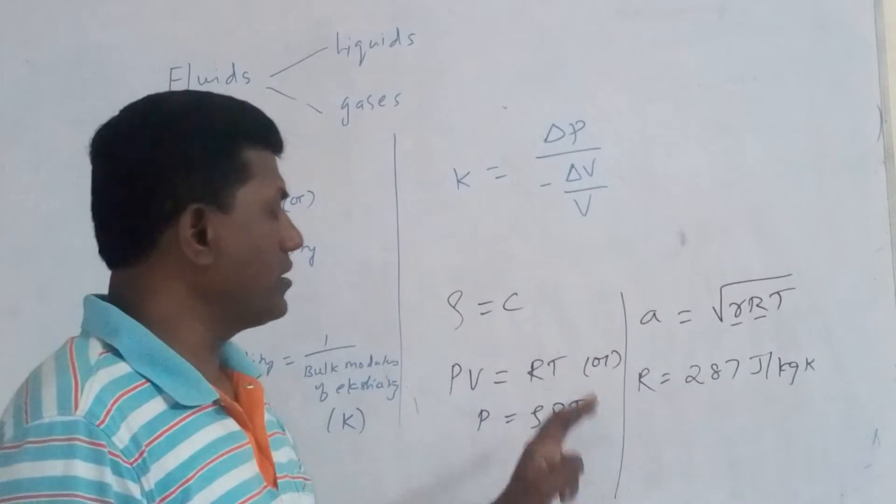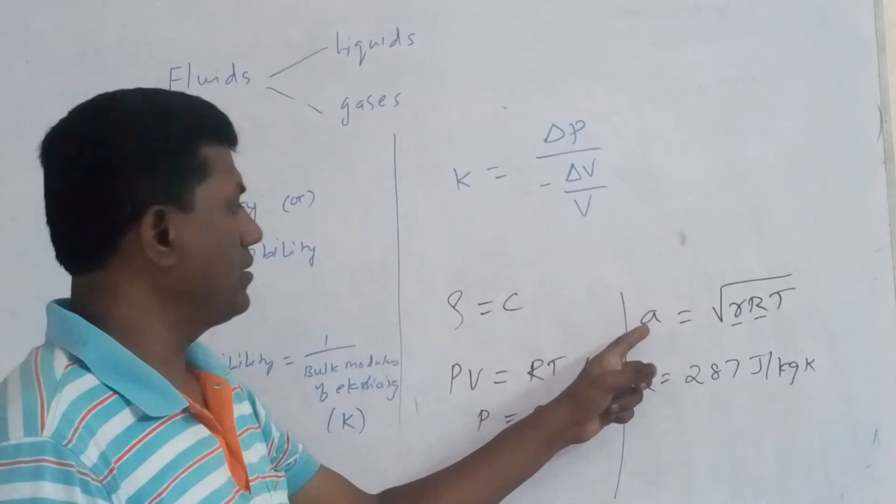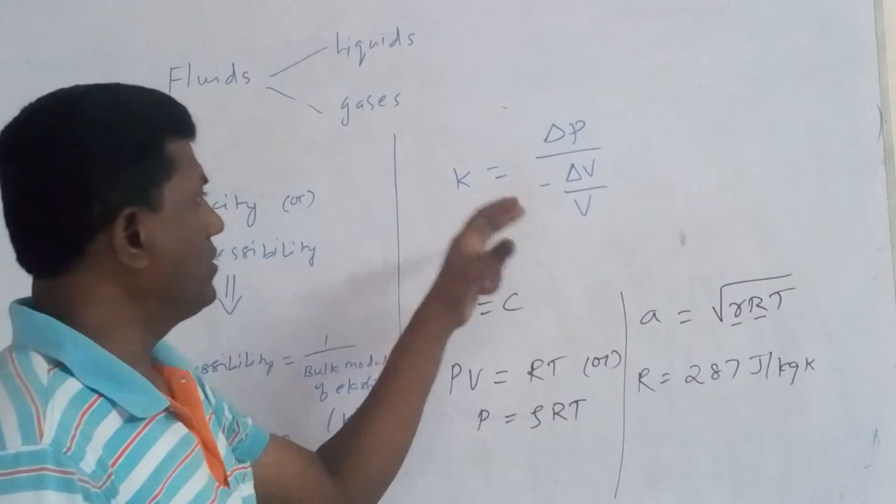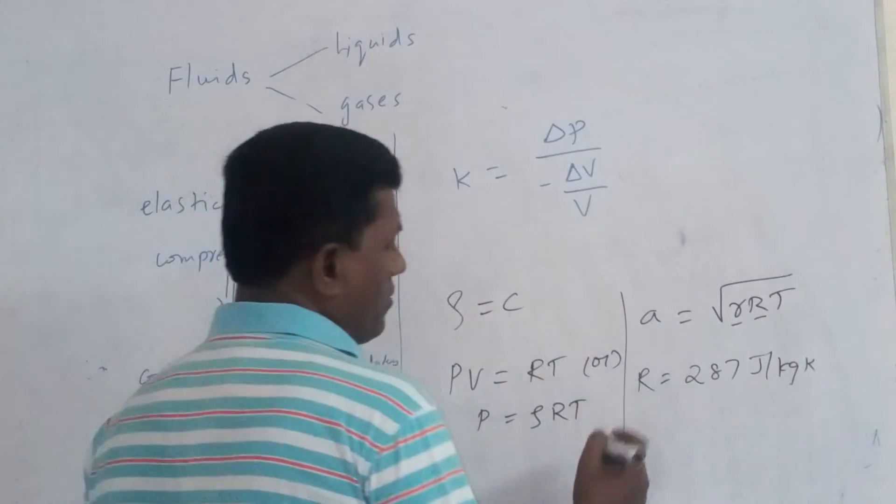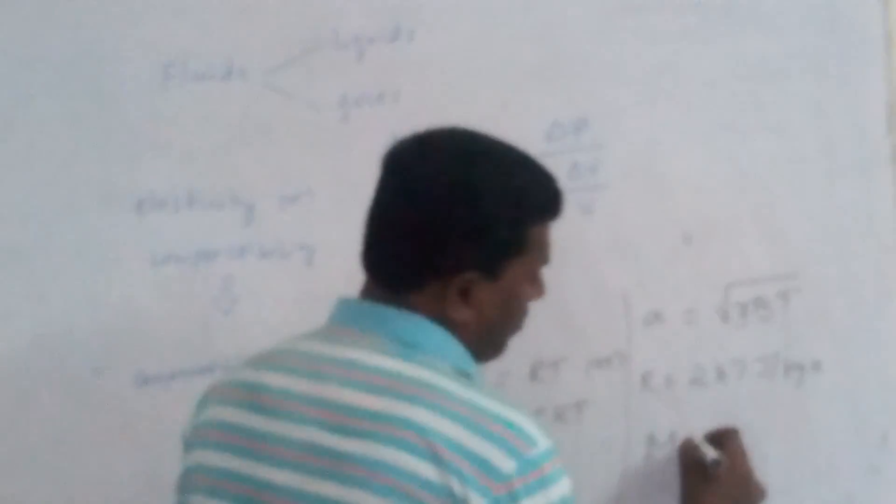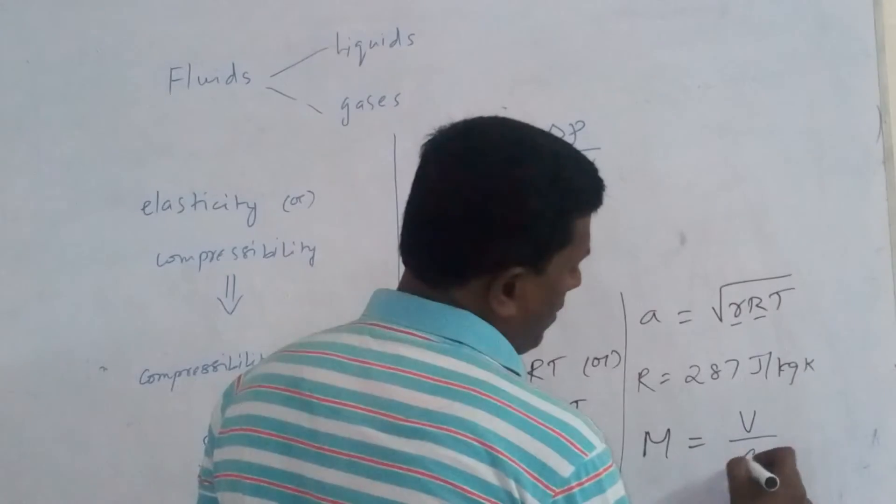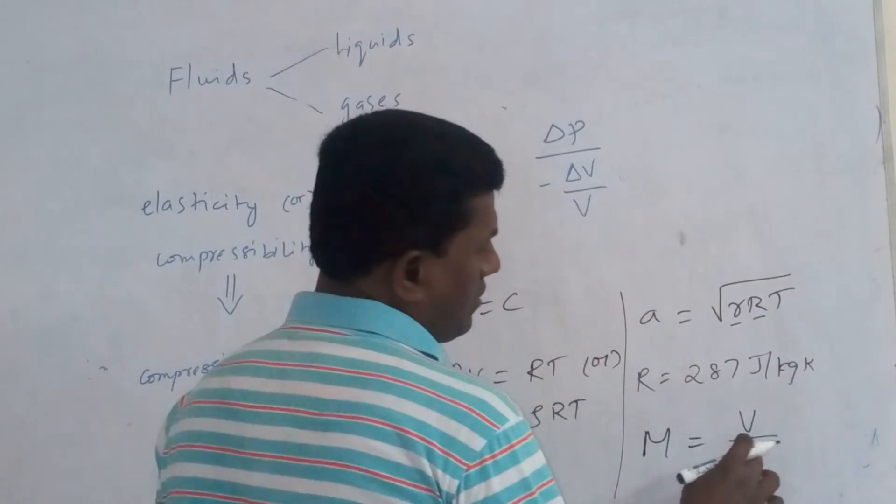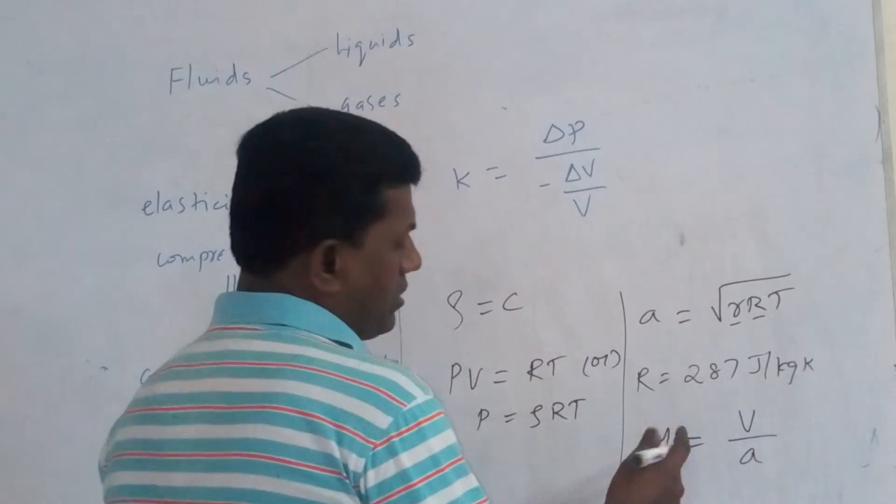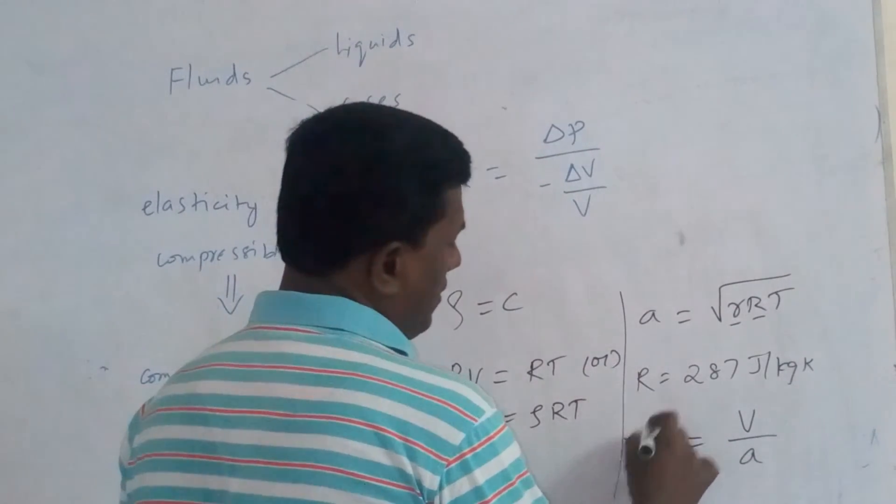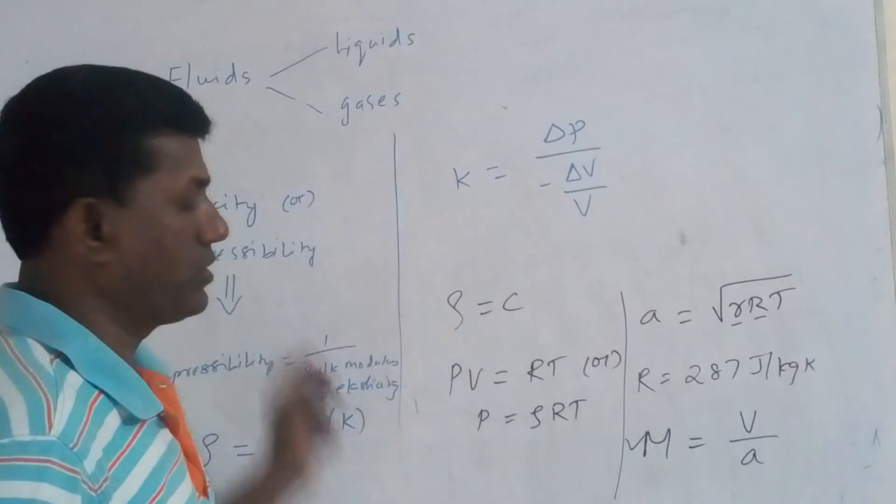The parameter which relates the speed of sound with the variation of density of gases is nothing but Mach number. So Mach number is nothing but velocity of the object divided by velocity of the sound. So this parameter is generally connected with compressibility.